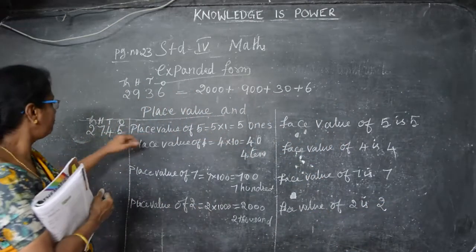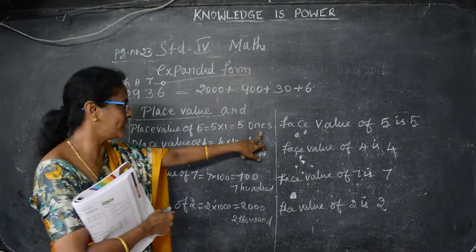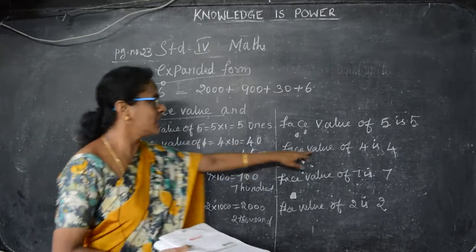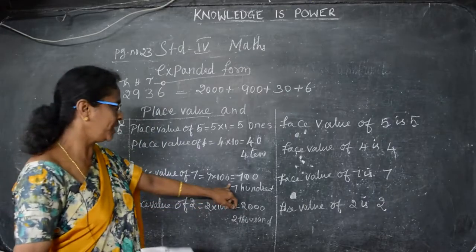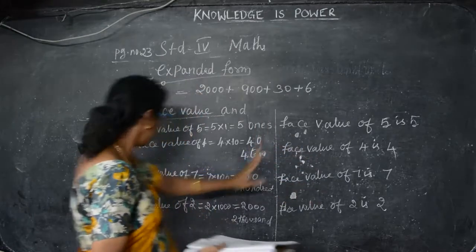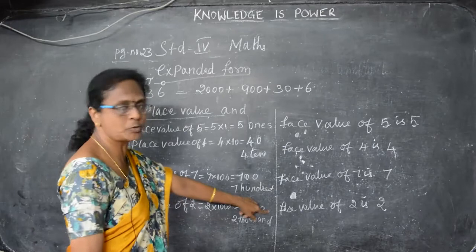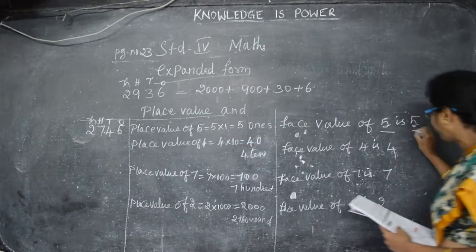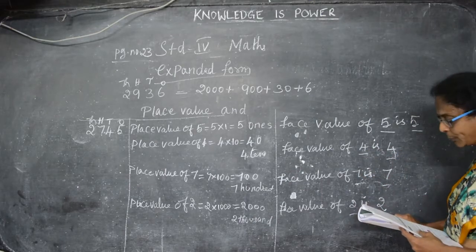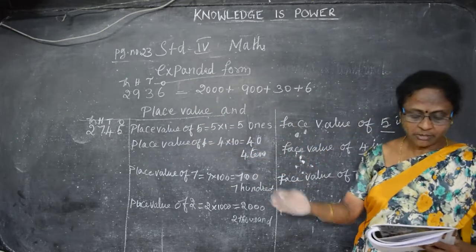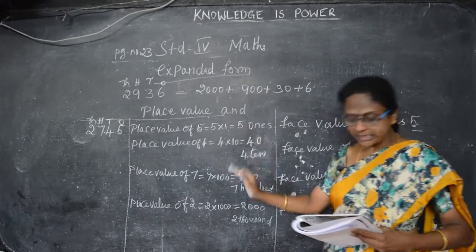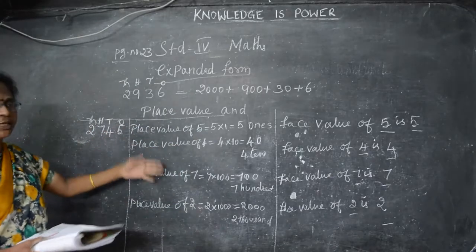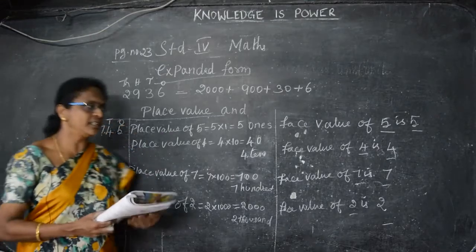Okay children. So the place value of 5 is 5 ones — face value of 5 is 5. Place value of 4 is 4 × 10 = 40, but face value is 4. Place value of 7 is 7 × 100 = 700, face value of 7 is 7. Place value of 2 is 2,000, face value of 2 is 2. So what is the difference between place value and face value? The face value of a digit is the digit itself — 5 is 5, 4 is 4, 7 is 7, 2 is 2 — at whatever place it may be in the number, the face value stays the same and is unchangeable. But the place value changes according to the digit's position.